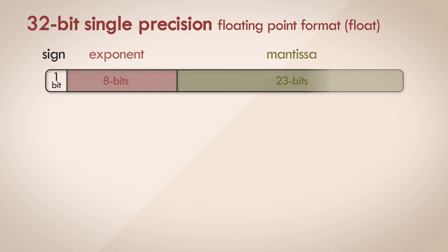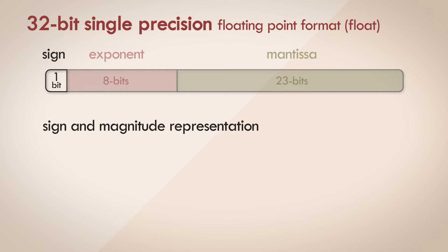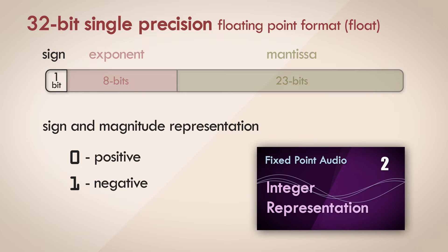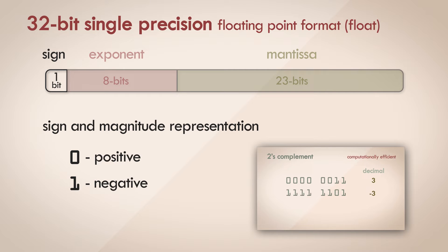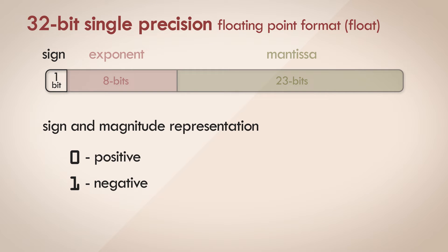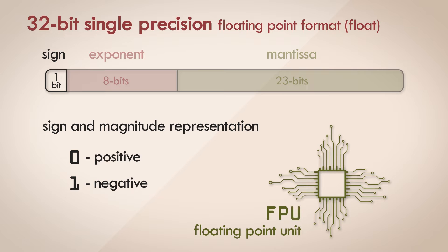Starting from the simplest section — the sign bit — we use the sign and magnitude representation: 0 signifies that the number is positive and 1 as negative. This might come as a surprise, as we deliberately avoided sign and magnitude for integers due to complex arithmetic and the ambiguous zero problem, choosing 2's complement instead. But floating point is an altogether separate beast. Floating point operations are fairly complex, and to handle them efficiently, we have specialized dedicated hardware called floating point units, integrated into the CPUs of most general purpose computers. Since they handle many complex operations, the ambiguous zero problem is relatively speaking a minor task.